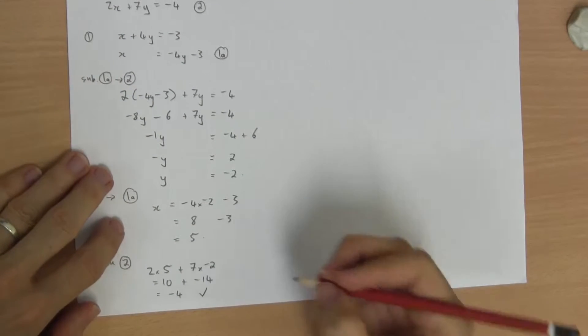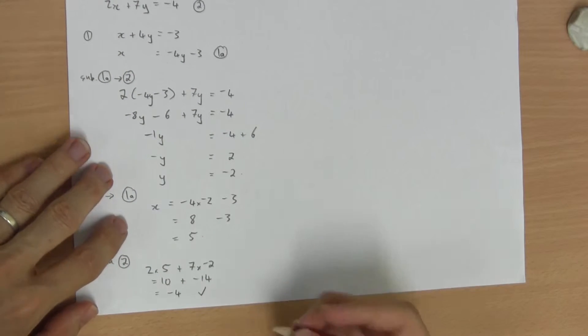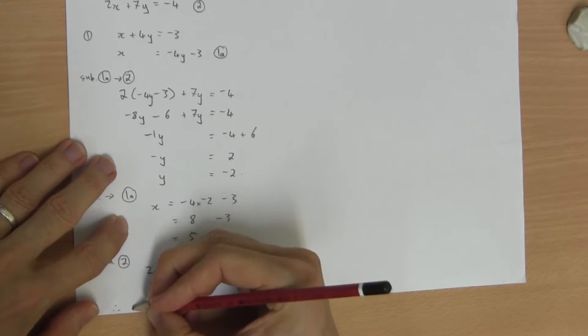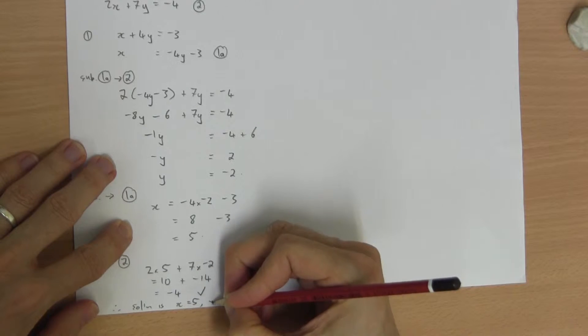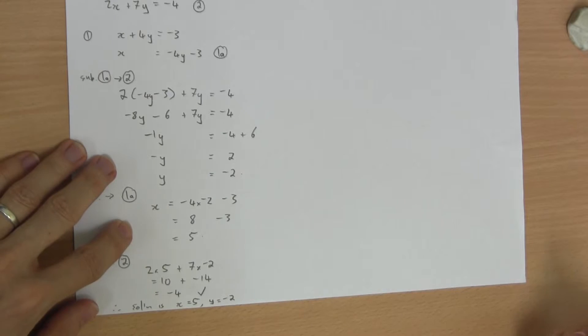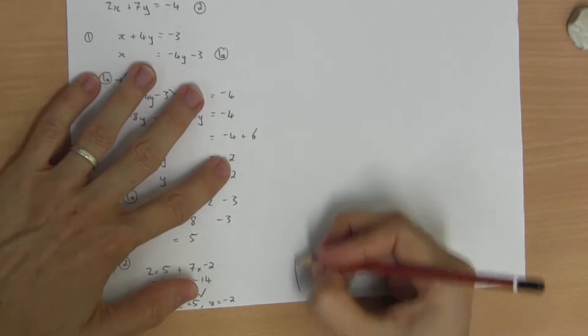So we've finished with the statement of our answer, which I'm only just going to fit on the page. Therefore, the solution is x equals 5, y equals negative 2. Let me show you another one.